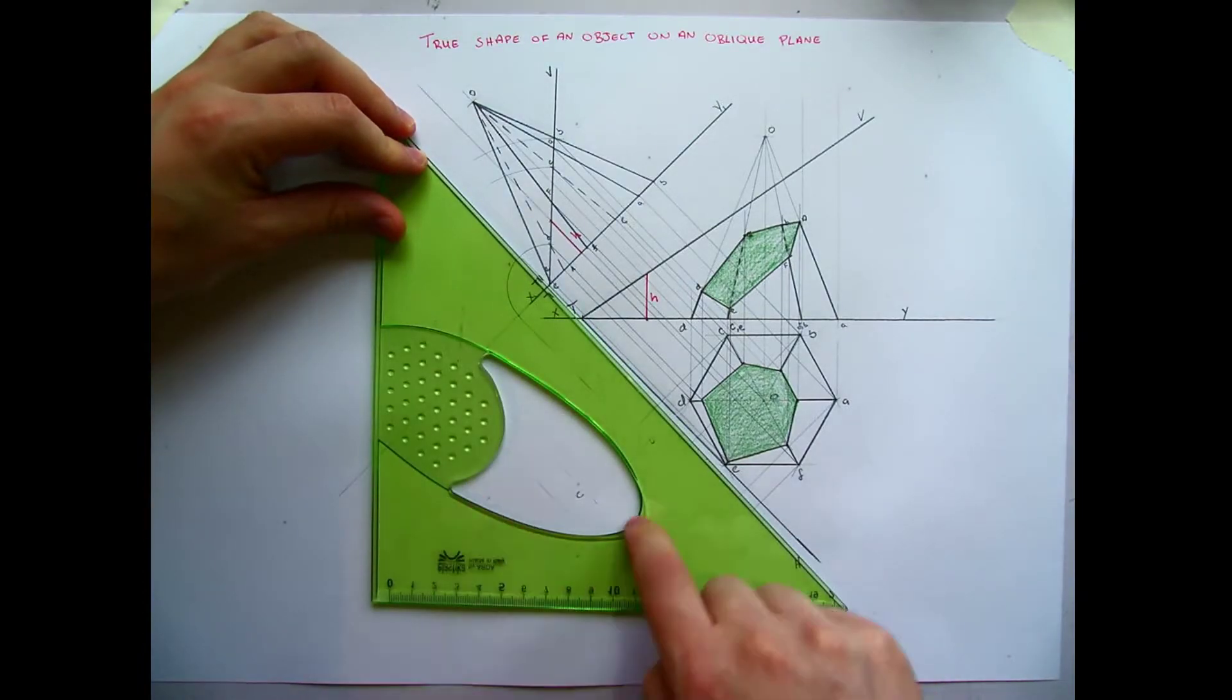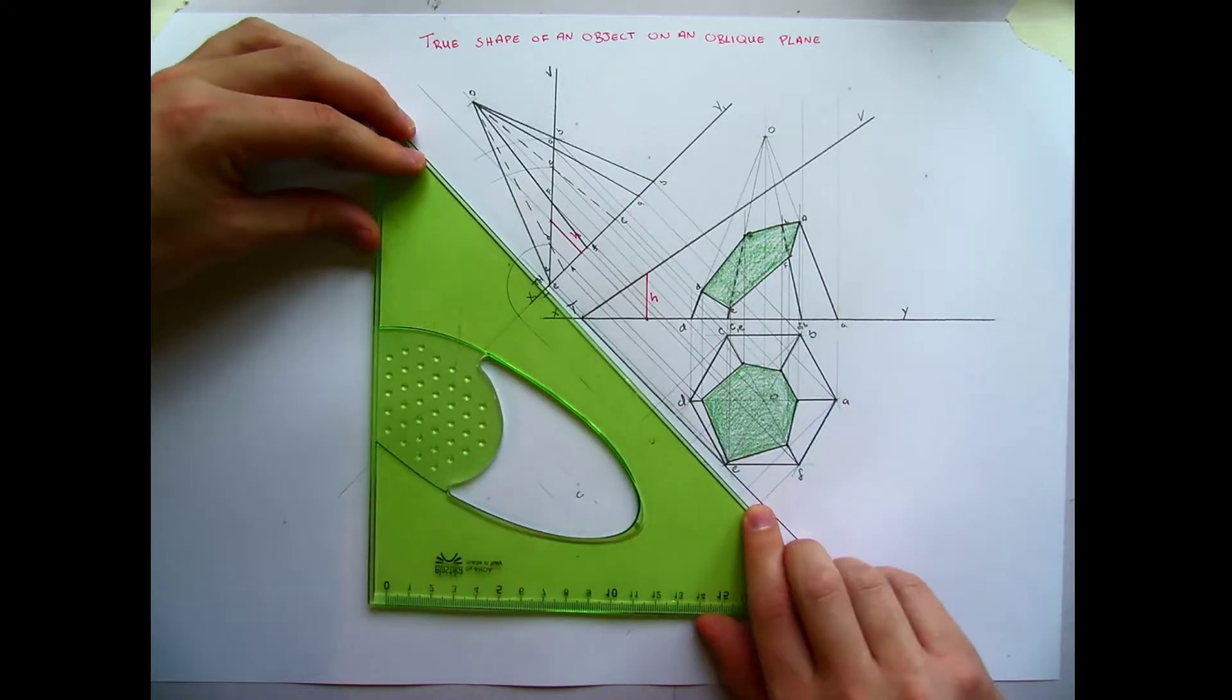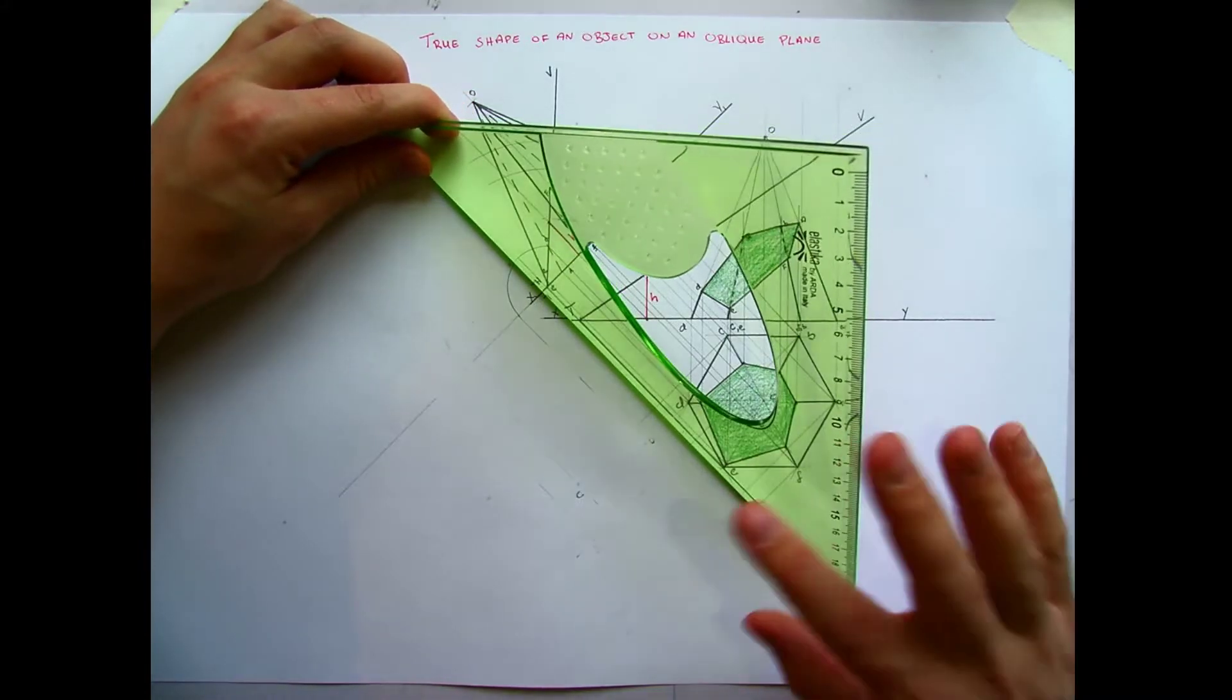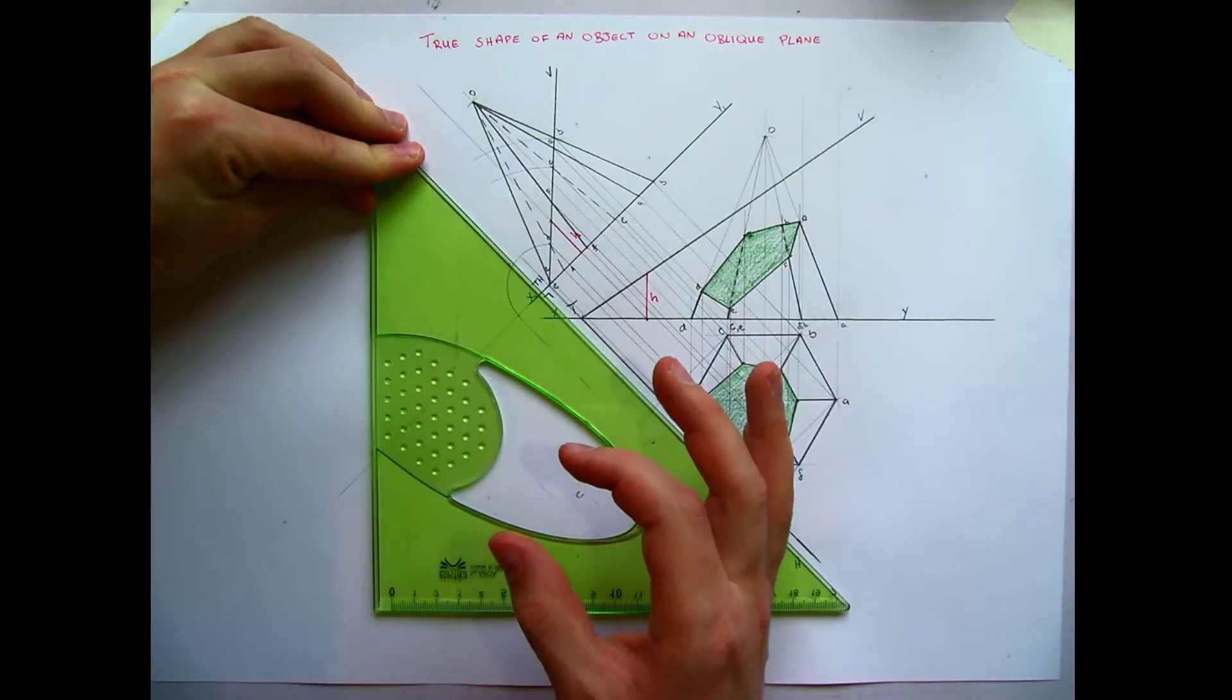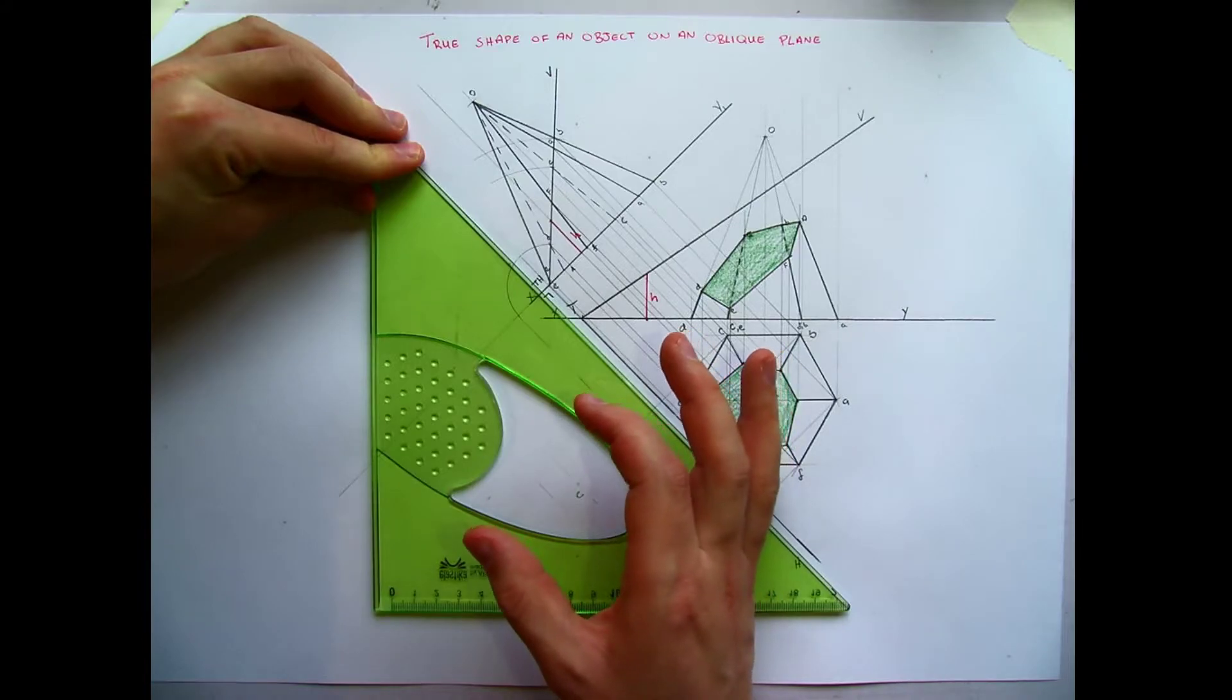And then when we're looking down on top, like this camera is at the moment, I can see what this true shape is. So at the moment I can't, it appears narrower than the full width of it. So when we flatten that down, then I see the full width of what that object is going to be.